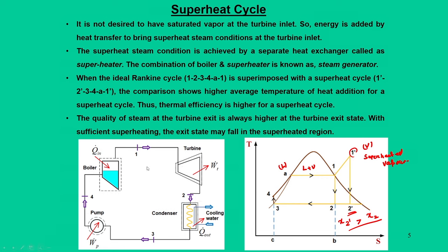Coming back to the boiler side, the extra arrangement we need is another unit called the superheating unit. The boiler and superheating unit combined are called the steam generator. We will look into the steam generator in more detail in subsequent modules. For now, we just need to understand that the steam generator includes the boiler and superheating system that supplies necessary heat to the working fluid.